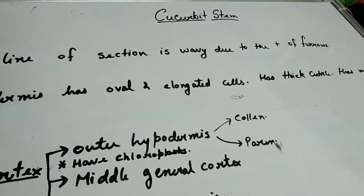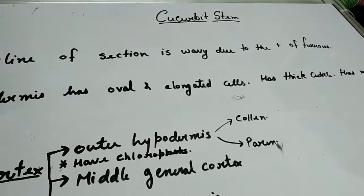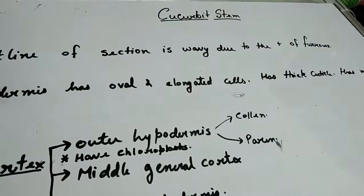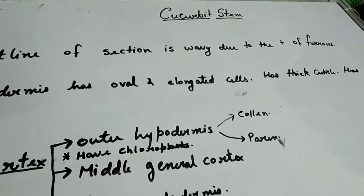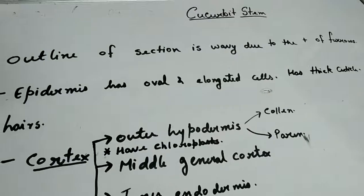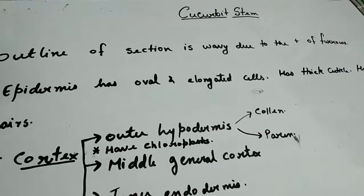So let's get started. Cucurbita stem includes, for example, cucumber, bitter gourd, and pumpkin. All these are under the cucurbita family.